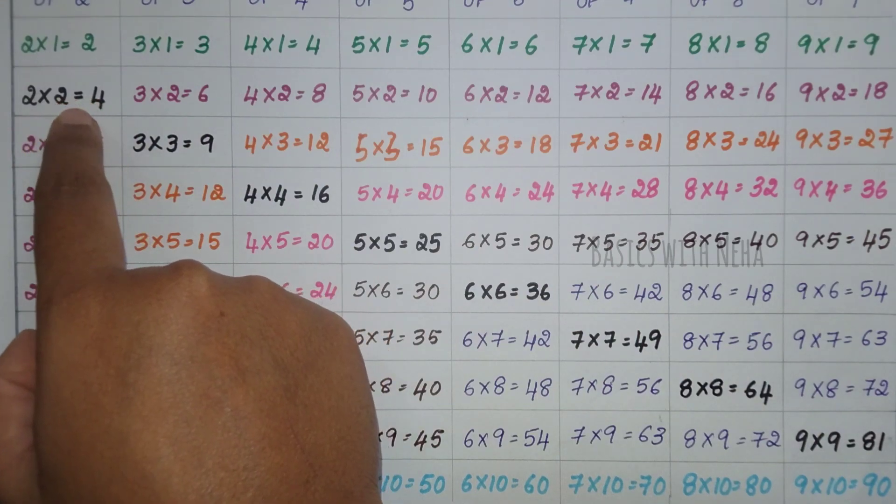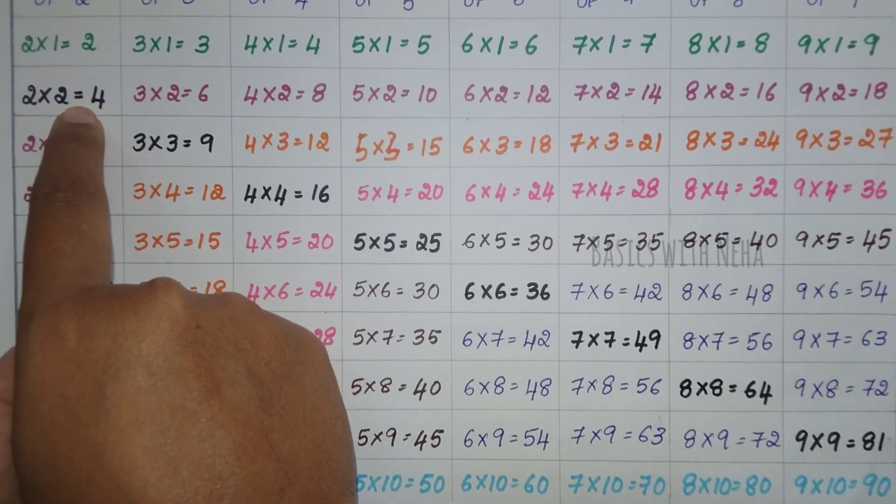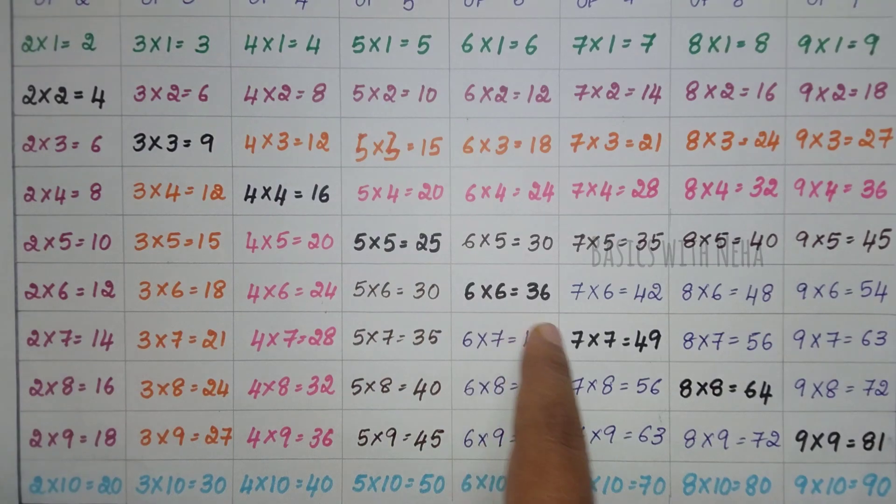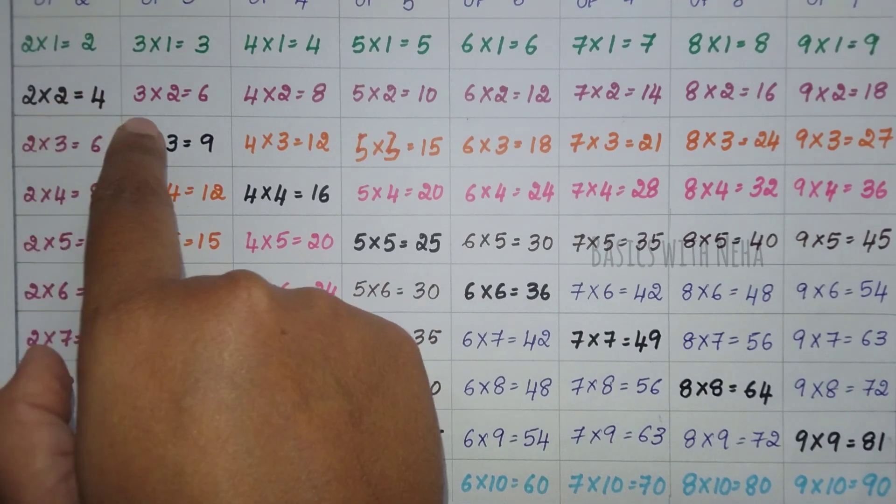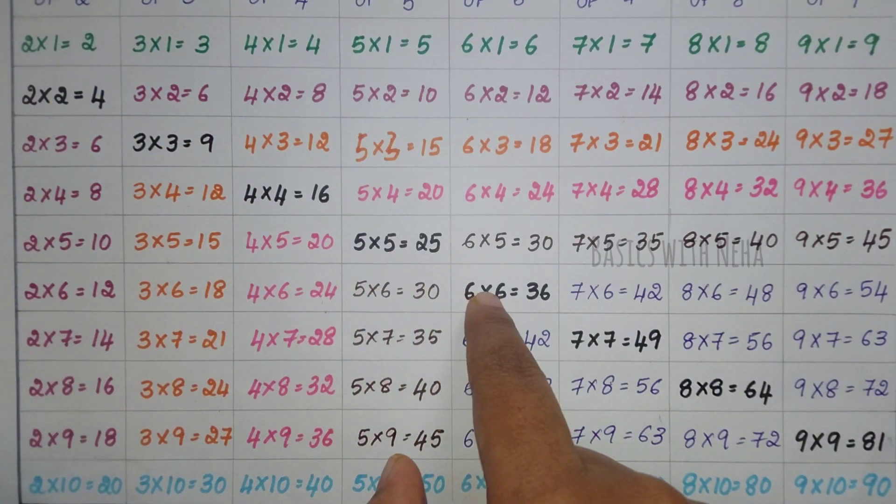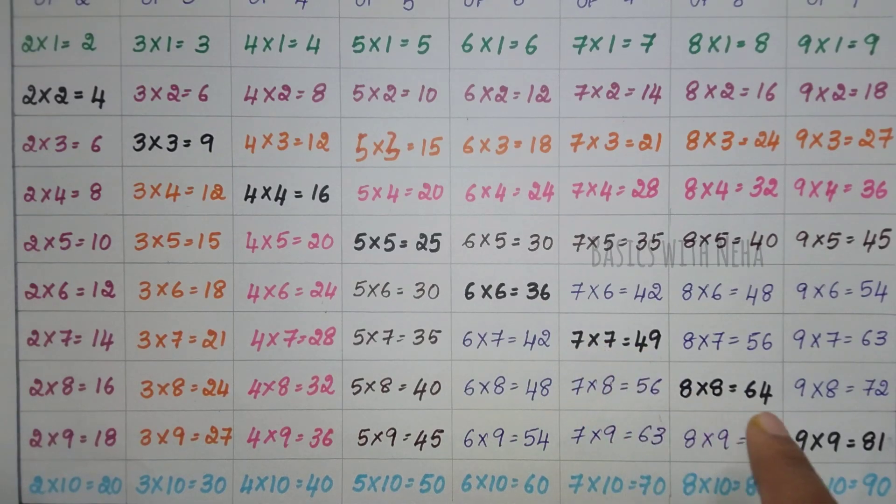And when you come to the second line it is 2×2s are 4. If you can see this diagonal thing here, these are all square numbers. So it is 2×2s are 4, 3×3s are 9, 4×4s are 16, 5×5s are 25, 6×6s are 36, 7×7s are 49, 8×8s are 64, 9×9s are 81, 10×10s are 100.